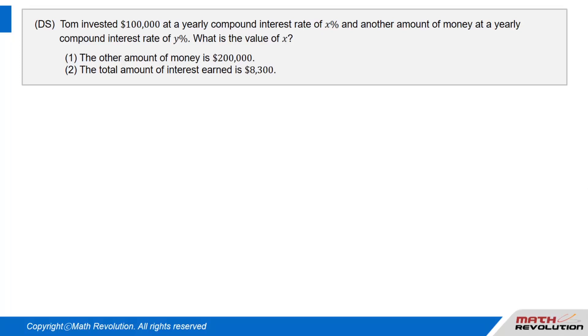Question. DS. Tom invested $100,000 at a yearly compound interest rate of X percent and another amount of money at a yearly compound interest rate of Y percent. What is the value of X? Condition 1: The other amount of money is $200,000. Condition 2: The total amount of interest earned is $8,300.